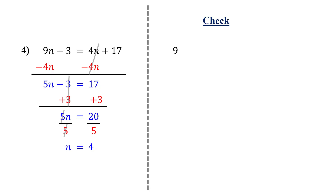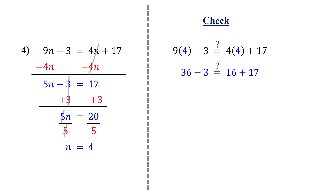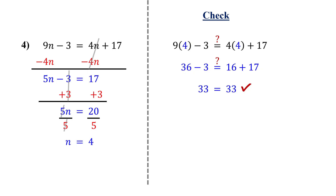To check, plug in 4 into the original equation and simplify. 9 times 4 is 36, and 4 times 4 is 16. Then 36 minus 3 is 33, and 16 plus 17 also equals 33. It checks out. Let's try another one.